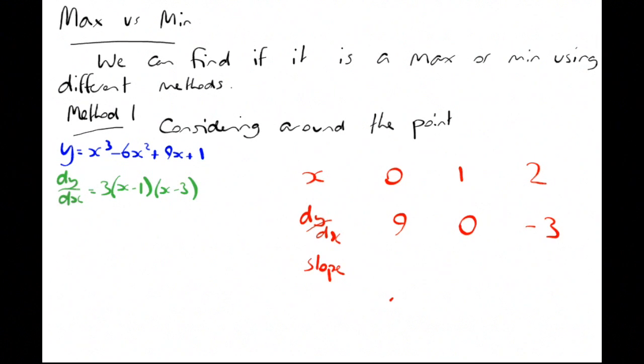So we can consider the slopes of these. First one's positive, then it's 0, and then it's negative. If you look at that picture, that's going to be a maximum, because it's got that maximum curve.